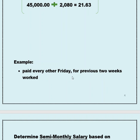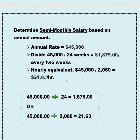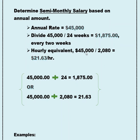Determining a semi-monthly salary based on an annual amount. Using $45,000 again, you divide that by 24 pay periods, and that will give you a semi-monthly salary of $1,875. That's twice a month — you're going to get paid twice a month in a semi-monthly schedule. It might feel like it's every two weeks, but really it is going to be twice a month. The hourly equivalent: take your $45,000 a year, divide it by 2,080, and that gives you $21.63 per hour.